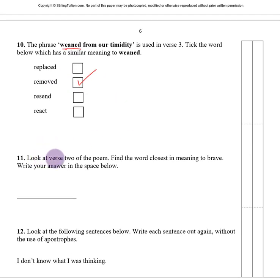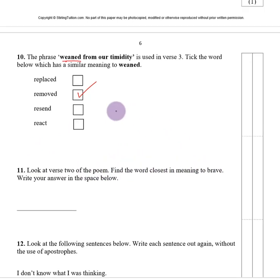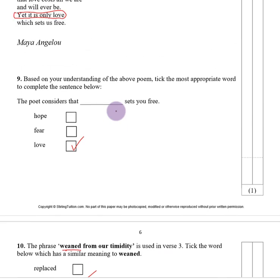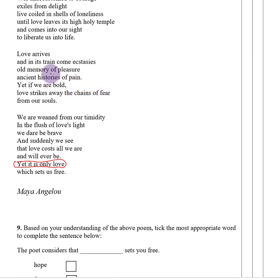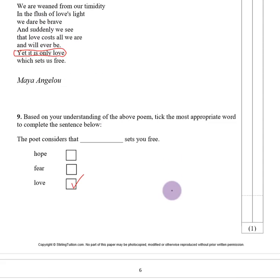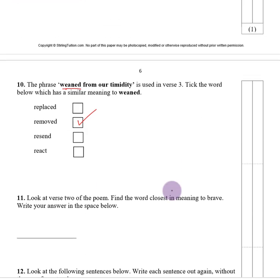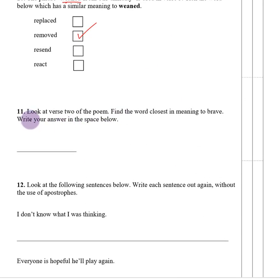Number eleven. Look at verse two of the poem. Find the word closest in meaning to 'brave.' Looking in verse two, the word is 'bold' — 'yet if we are bold.' You could also say 'yet if we are brave.' So the word there is bold.